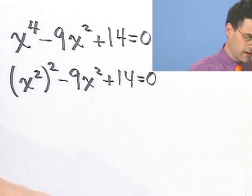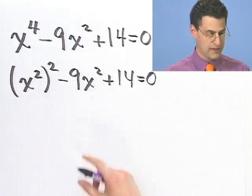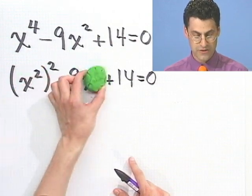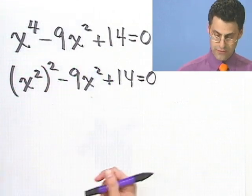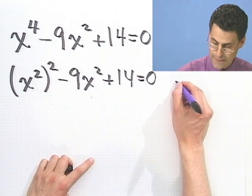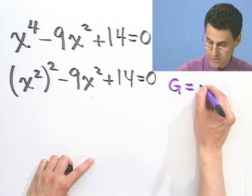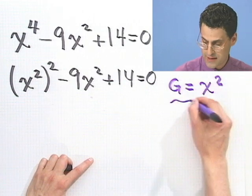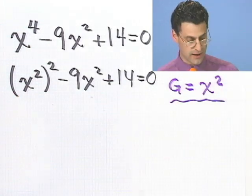So let's make a little variable change here. Let me call that little blob something. The x squared, I'll call it g for green. So what I'm going to do is I'm going to say let's let g equal x squared for the moment. Just a little substitution there to get out that x squared.